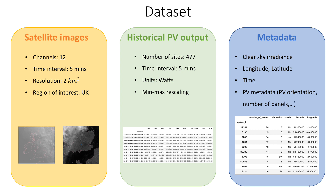Satellite images consist of 12 different channels recorded every five minutes, with a resolution of 2 km² per pixel. The region of interest is the UK. For the historical PV output data, we are mainly interested in around 500 different sites after processing the data. The dataset can be seen as a big matrix, where each row corresponds to time, each column corresponds to a different location, and the value corresponds to the PV output.